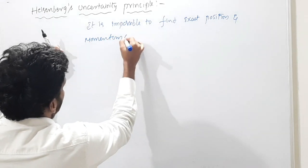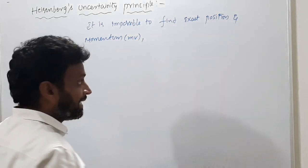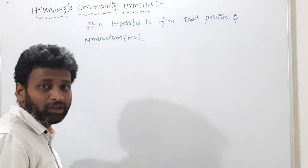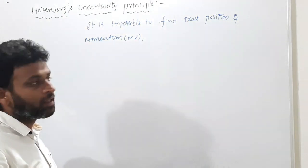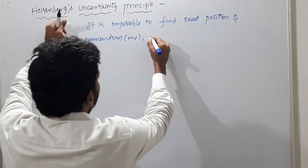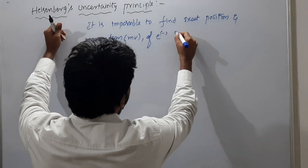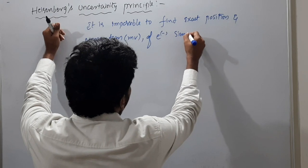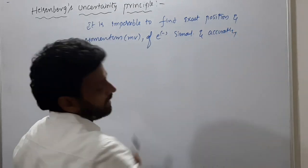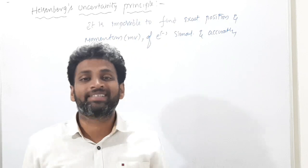Momentum means mass into velocity. It is impossible to find, determine, or give the exact position and momentum of an electron simultaneously and accurately. We cannot give both simultaneously and accurately — that is what Heisenberg said.